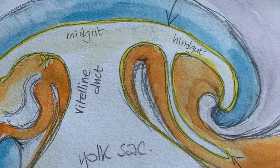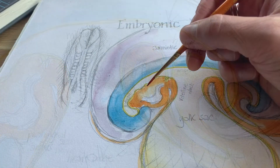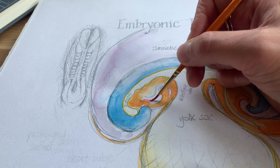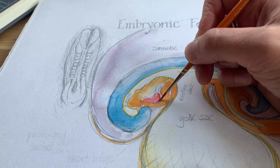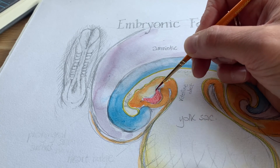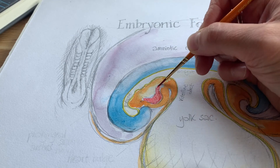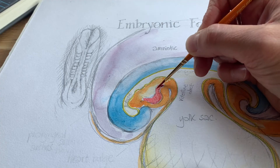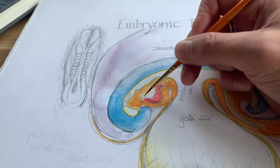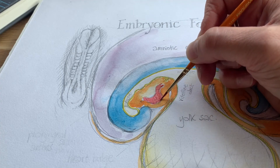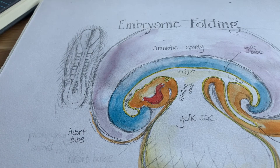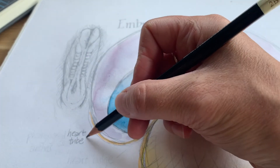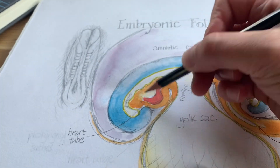Up in the neck region of the embryo is the primitive heart tube, which has already formed. This tiny, very primitive heart is already beating in week four.